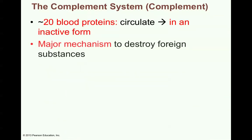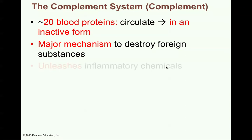There's another system of chemicals called the complement system, or complement. It's about 20 different blood proteins that circulate in your blood in an inactive form. These blood proteins of the complement system are hanging around, ready if they're needed, but in the inactive form. Complement is the major mechanism to destroy foreign substances. It unleashes inflammatory chemicals. Inflammation will then start to localize and fight that infection, or even a foreign substance like a toxin produced by bacteria.